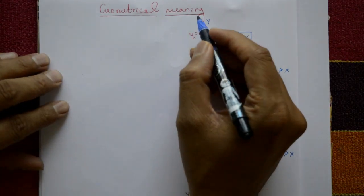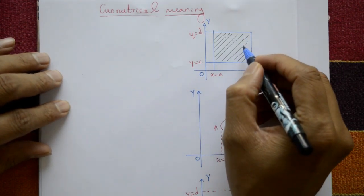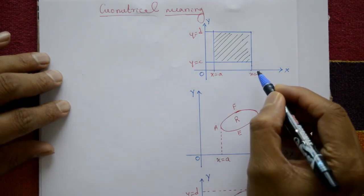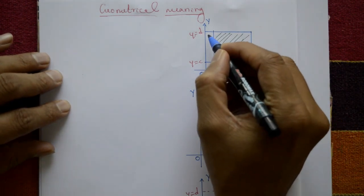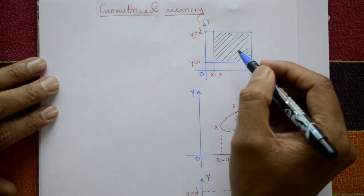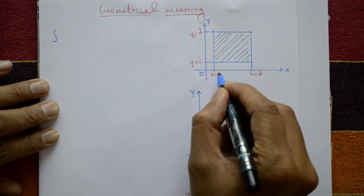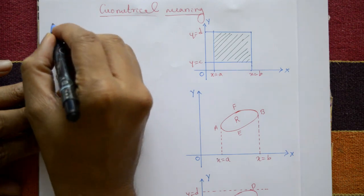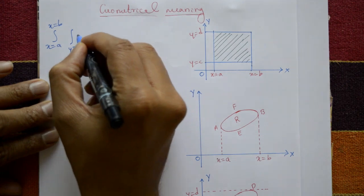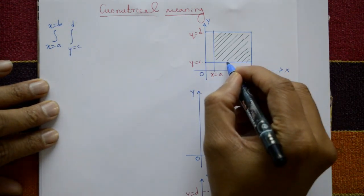Now see the geometrical meaning. The x and y axes define a region R in the xy-plane. The points are x equals a to x equals b, and y equals c to y equals d. To find this area region using integration, the first integral is from x equals a to b, and the second integral is from y equals c to y equals d.